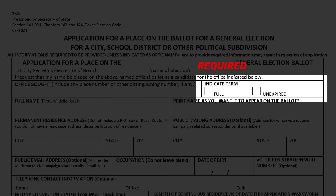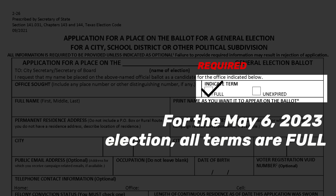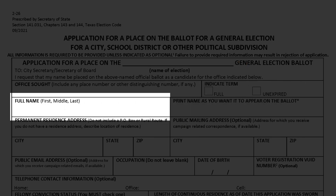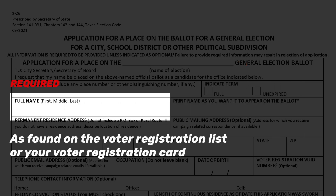The next field asks you to indicate the term. For the May 6, 2023 general election, all terms are full. The next field requires you to fill in your full name. Fill in your name as it would be found on the voter registration list or on your voter registration card. This name will be used to determine your voter eligibility and age.